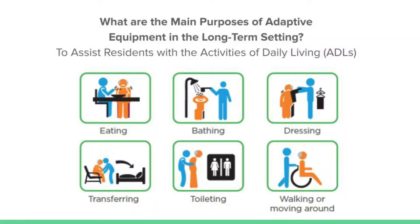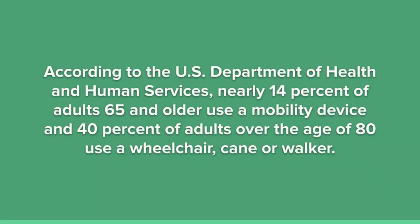In the long-term care setting, the main purposes of adaptive equipment are to assist residents with activities of daily living — activities like eating, bathing, dressing, transferring, toileting, and walking. According to the U.S. Department of Health and Human Services, nearly 14 percent of adults 65 and older use some type of mobility device, and 40 percent of adults over the age of 80 use a wheelchair, a cane, or a walker.